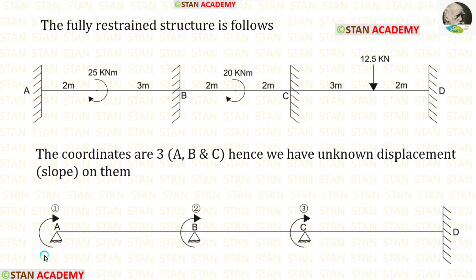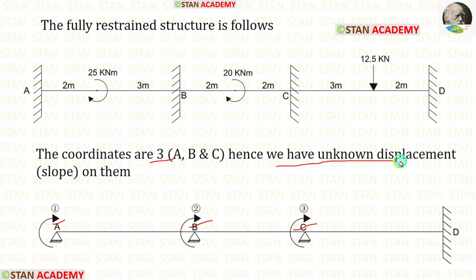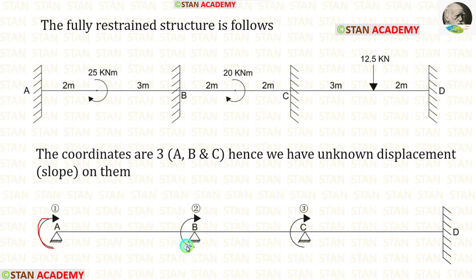Now let us make the coordinates diagram. In this analysis, there are 3 coordinates — at points A, B, and C — because those are the only points with unknown displacement, that is, slope. The coordinates should be made in the clockwise direction, and you can see that all coordinates are in the clockwise direction.